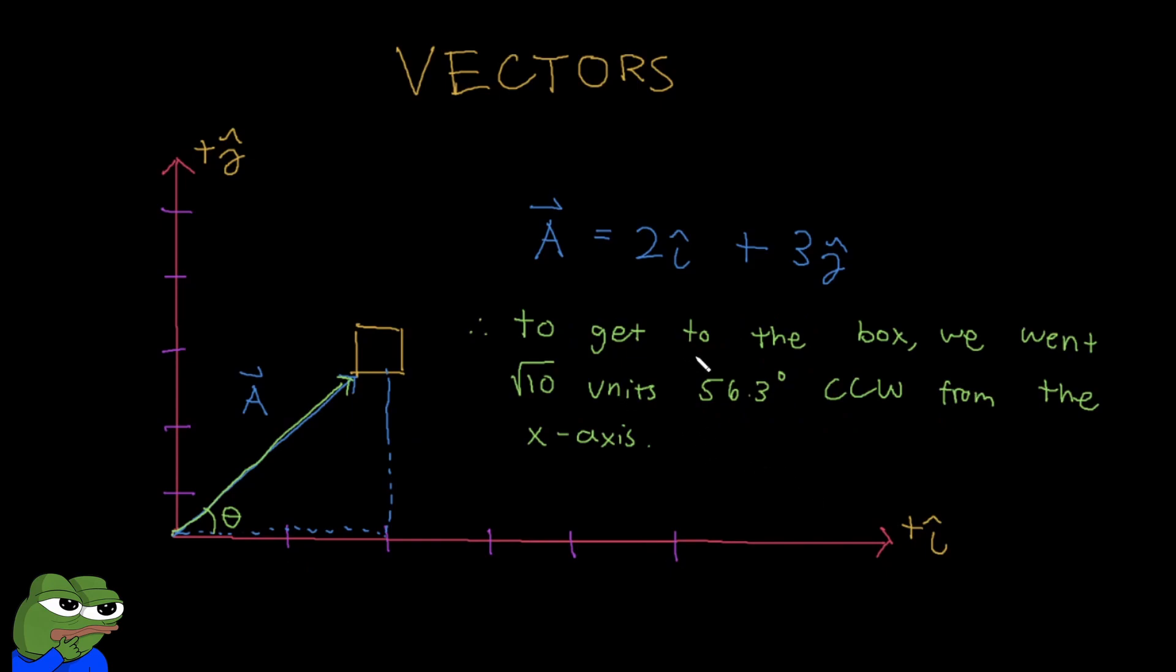Ultimately, we can conclude that by analyzing this vector A, we have now the information that in order to get to the box, we went root 10 units 56.3 degrees counterclockwise from the x-axis. So this shows you the basics of vectors and how powerful they can be. Next time, you'll probably be learning a lot more complex concepts like manipulating vectors or operating on them. But for now, hopefully, this video gave you a basic background on how vectors work and the definition of vectors.